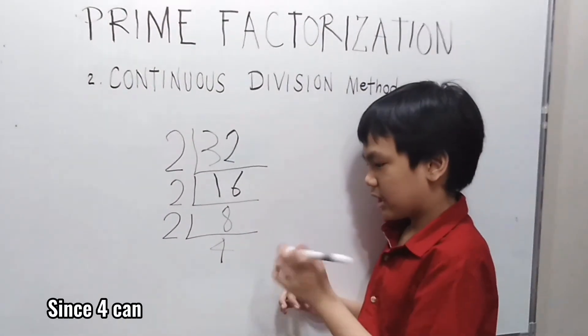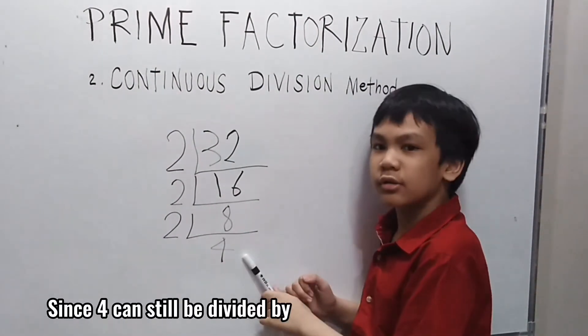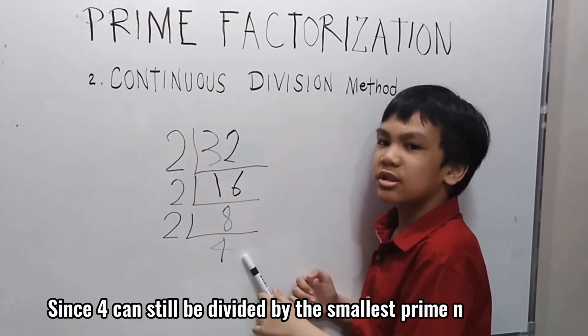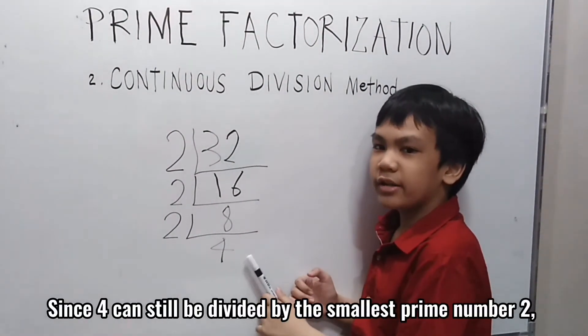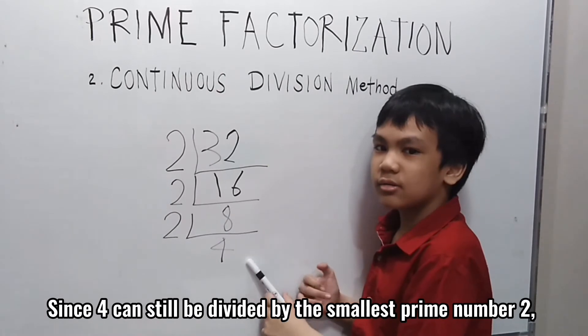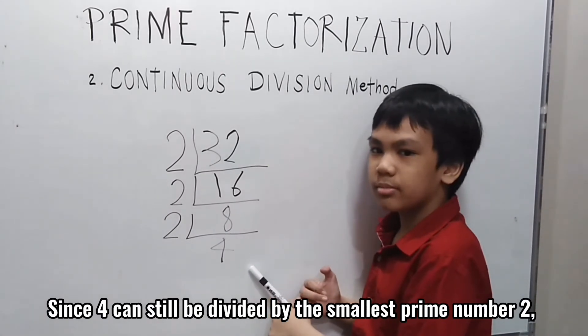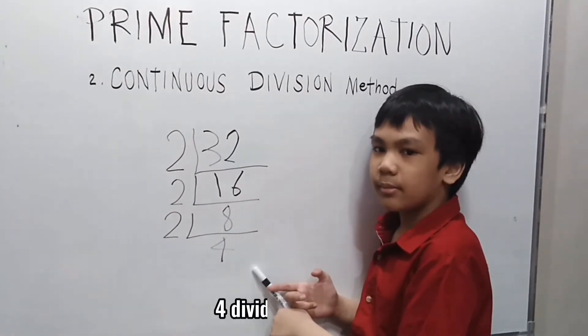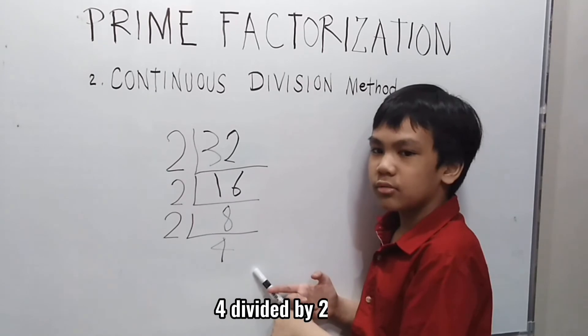4 can still be divided by the smallest prime number 2. 4 divided by 2 is 2.